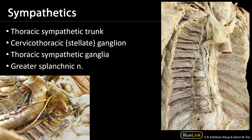Speaking of the sympathetic trunks, we can see the right sympathetic trunk here. This is lying paravertebrally, so it is just outside of the posterior mediastinum. This thoracic trunk consists of the stellate ganglion and then regular ganglia, each associated with the ventral primary rami of the thoracic nerve as we descend through the thorax. The stellate ganglion is also known as the cervicothoracic ganglion because it's where the inferior cervical ganglion coalesces with the first thoracic or T1 ganglion.